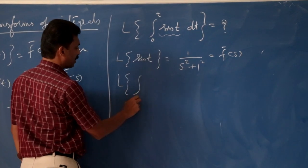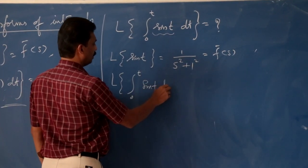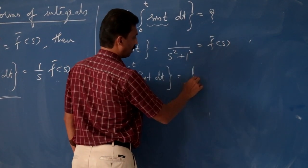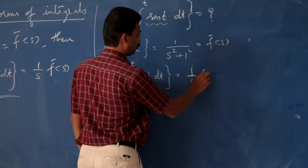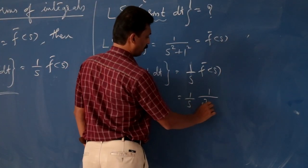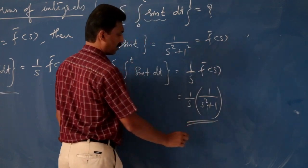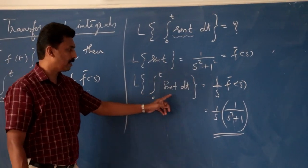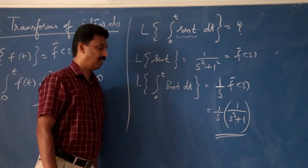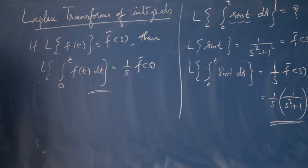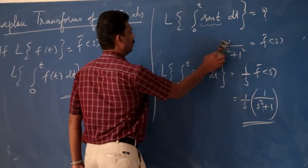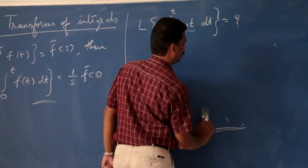The Laplace transform of the integral from 0 to t of sin t dt is equal to (1/s)·F̄(s), which is 1 divided by s(s² + 1). This is the answer — the Laplace transform of the integral equals (1/s) times the Laplace transform of the integrand.